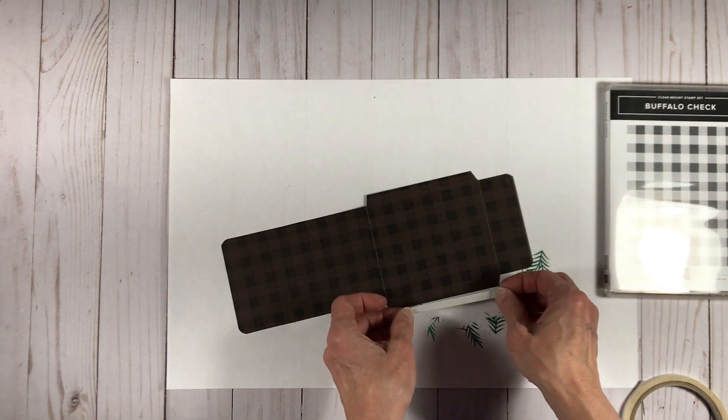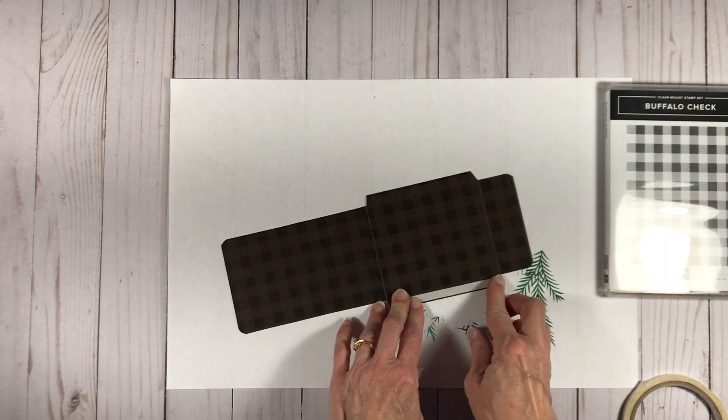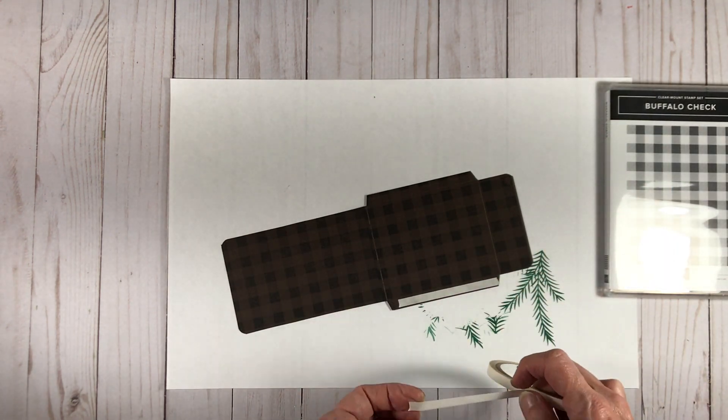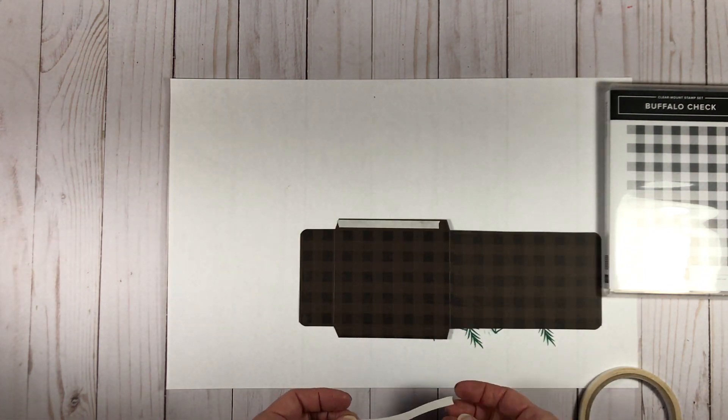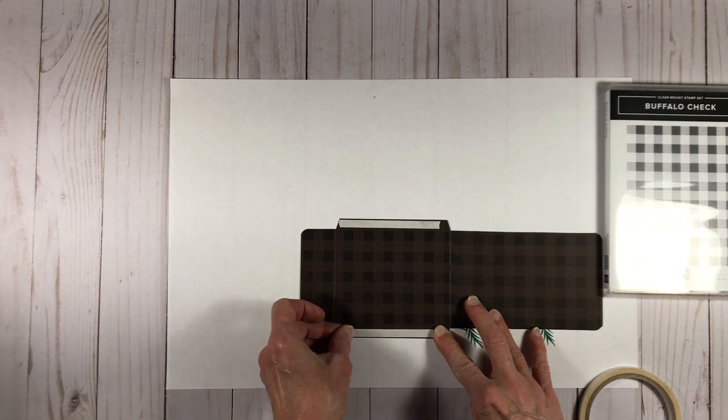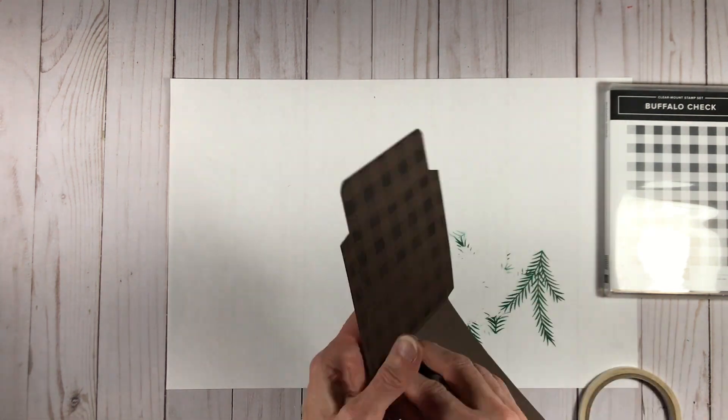So next for this piece I'm going to put my tear and tape on those flaps, and in fact it is a little bit better to put the tear and tape on after you've done your stamping so you're not getting ink on those pieces of tear and tape.